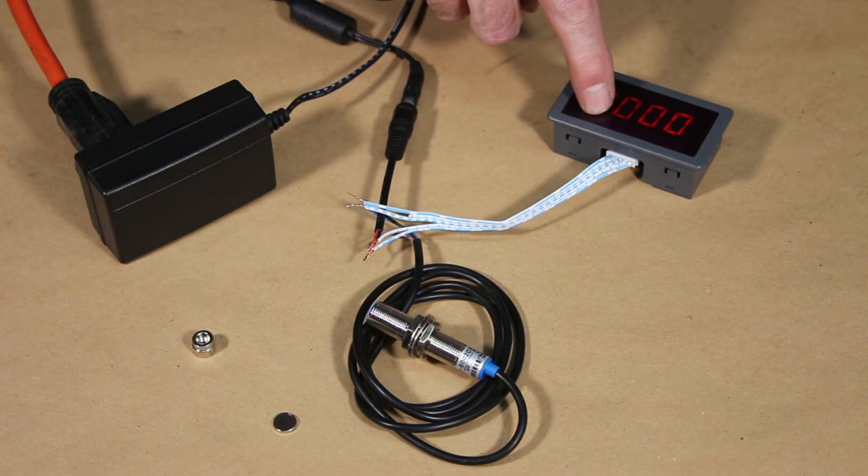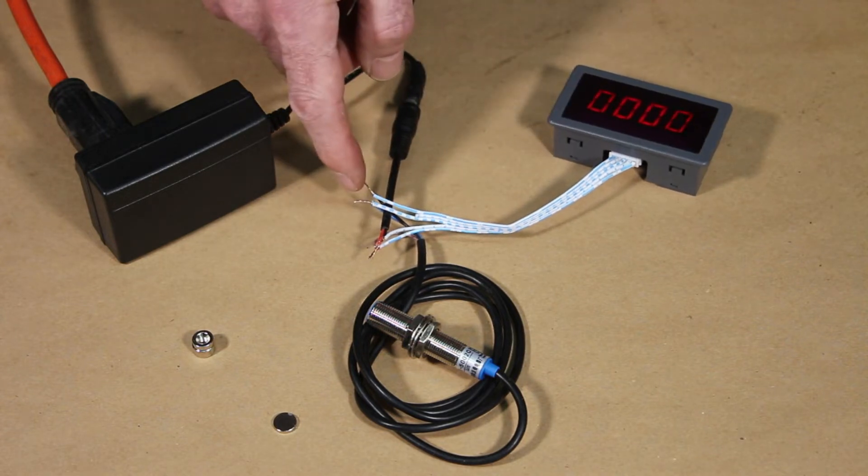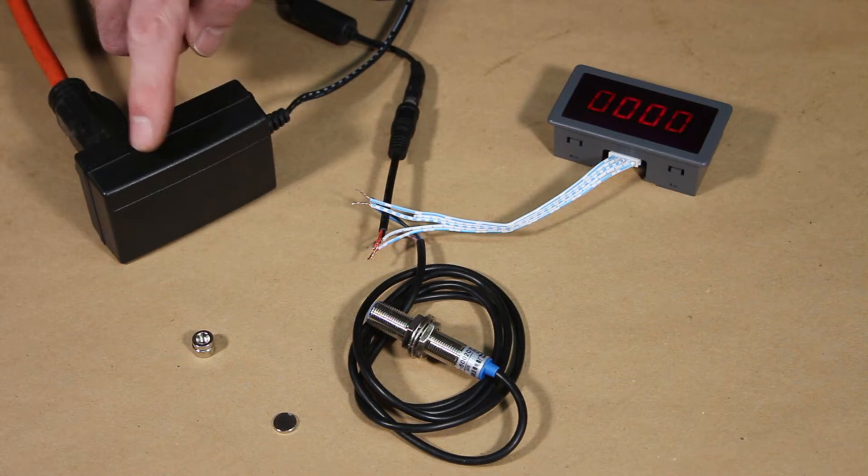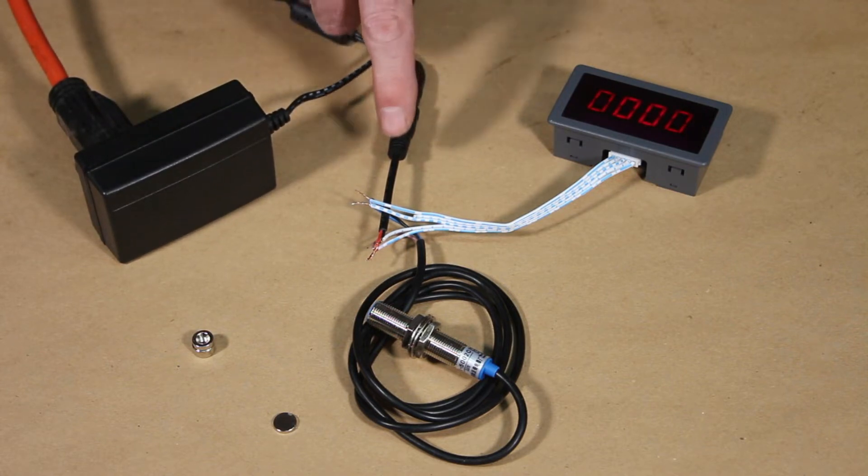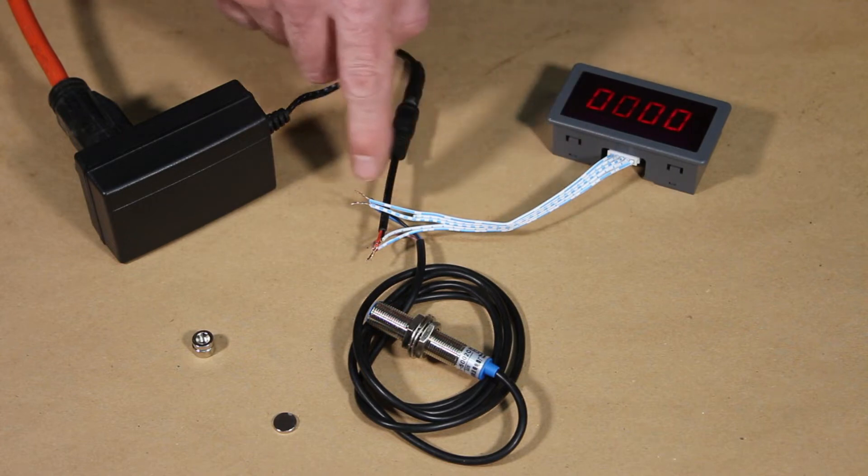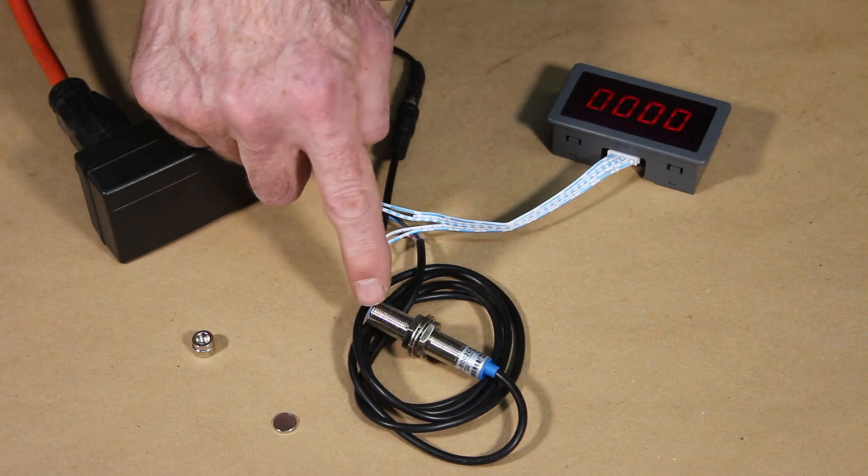So here I have the tachometer connected loosely with some twisted together wires. Basically what I have here is a 12 volt DC power adapter, not AC of course, coming through to a barrel adapter to two wires, red and black, plus and minus 12 volts, go into the display. Three wires then connect to plus and minus, and also a sensor signal wire going to the sensor here.